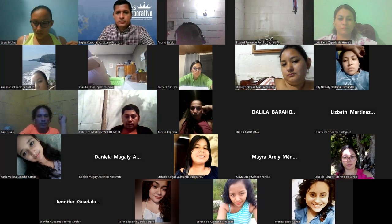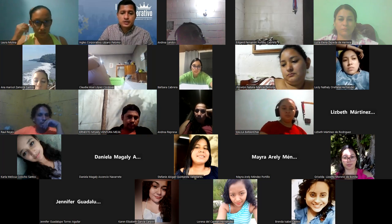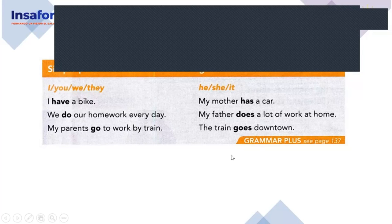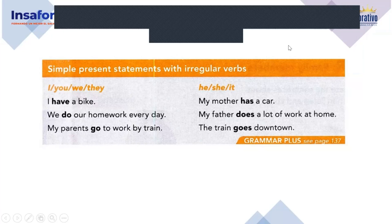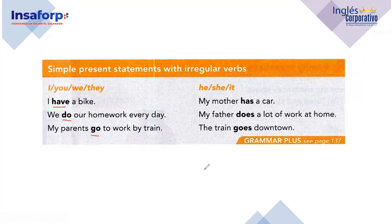I want to show you something before we go — it's related to Simple Present. Maybe you know this already, but it's just for you to remember. With Simple Present we also have irregular verbs: 'have,' 'do,' and 'go.' Be careful when you use these three verbs in English, especially with affirmative sentences.